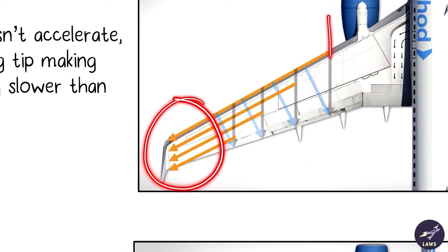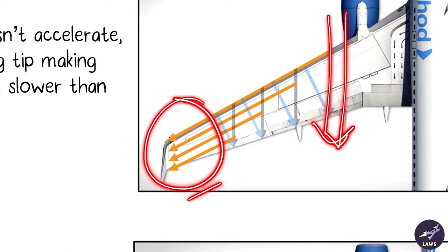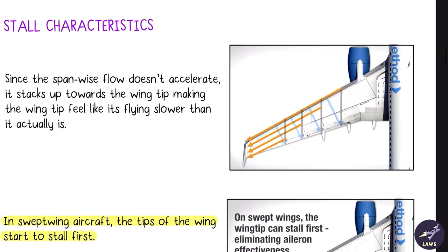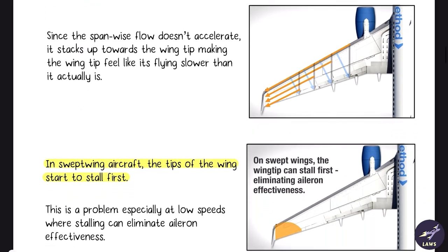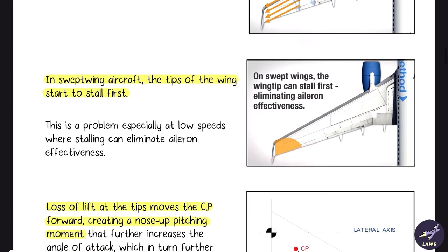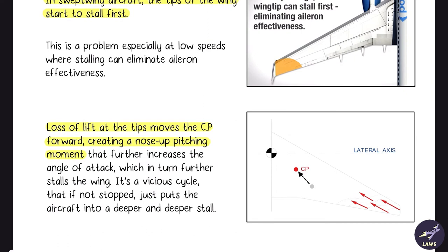So the tips will stall first and the root stalls later. Because the tips stall first, there is no aileron effectiveness — ailerons are rendered ineffective. In a swept-back wing, loss of lift at the wing tips moves the center of pressure forward, creating a nose-up pitching moment.